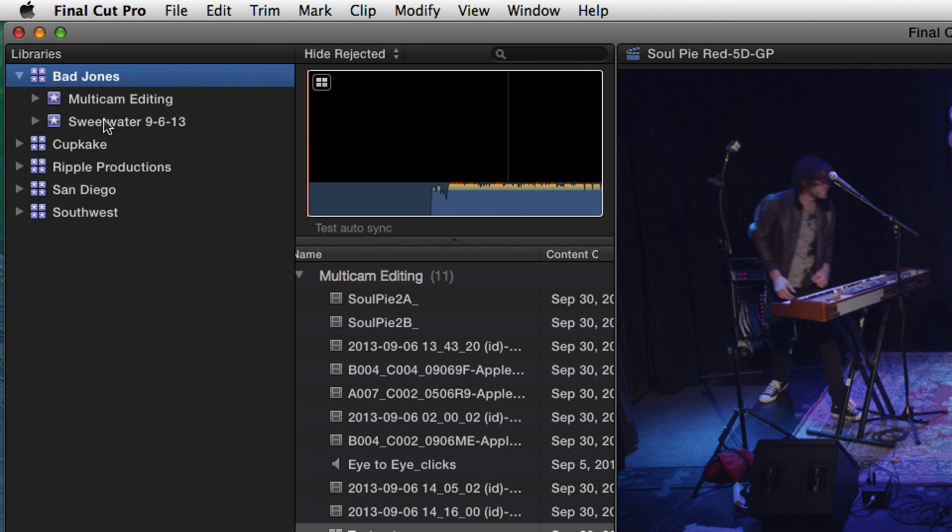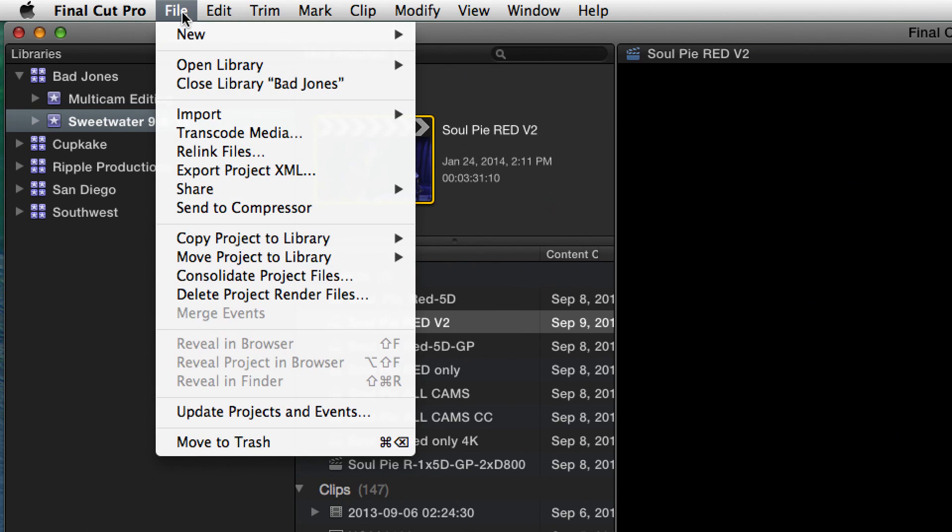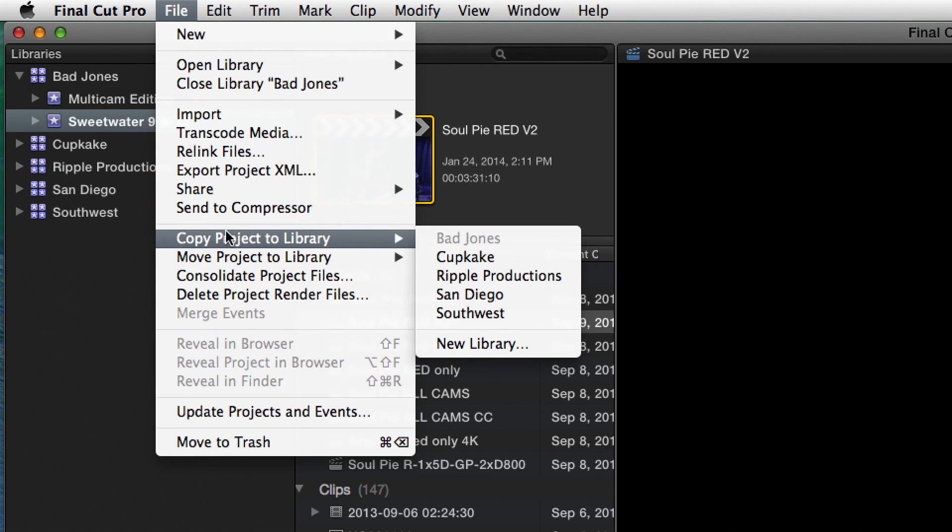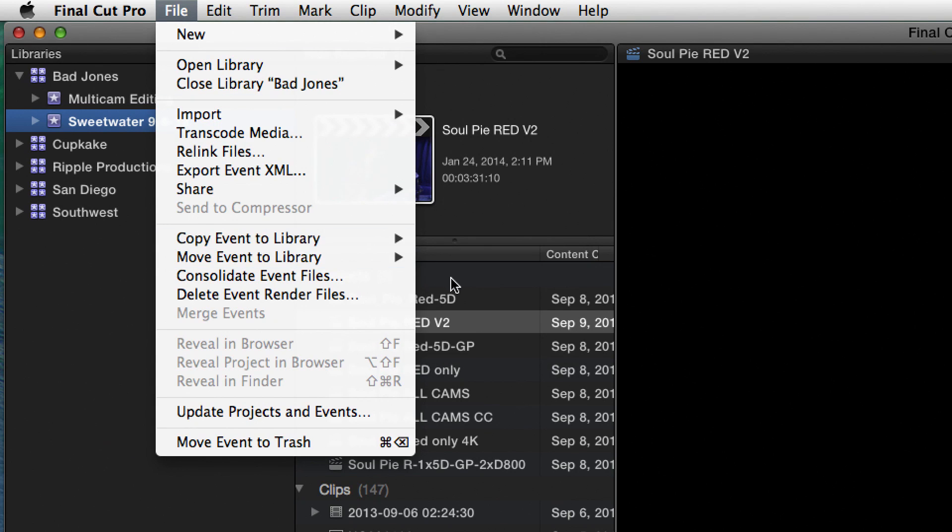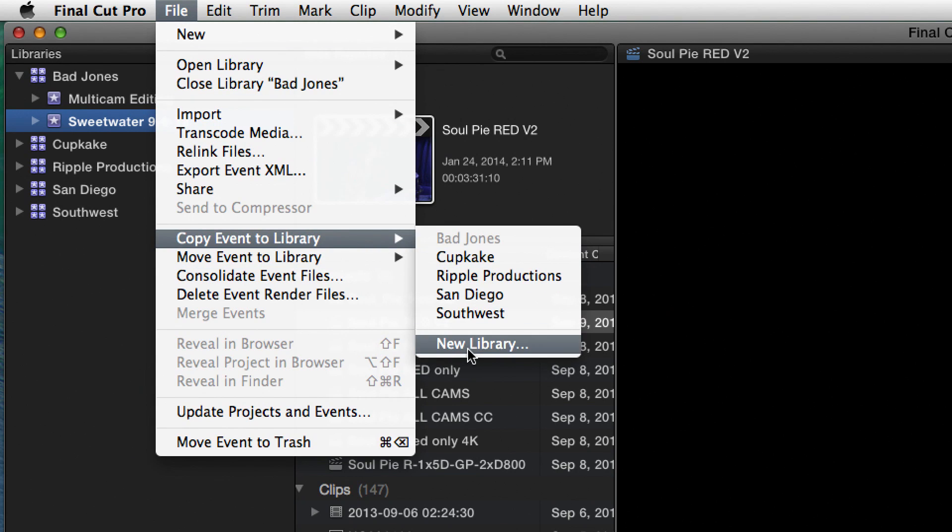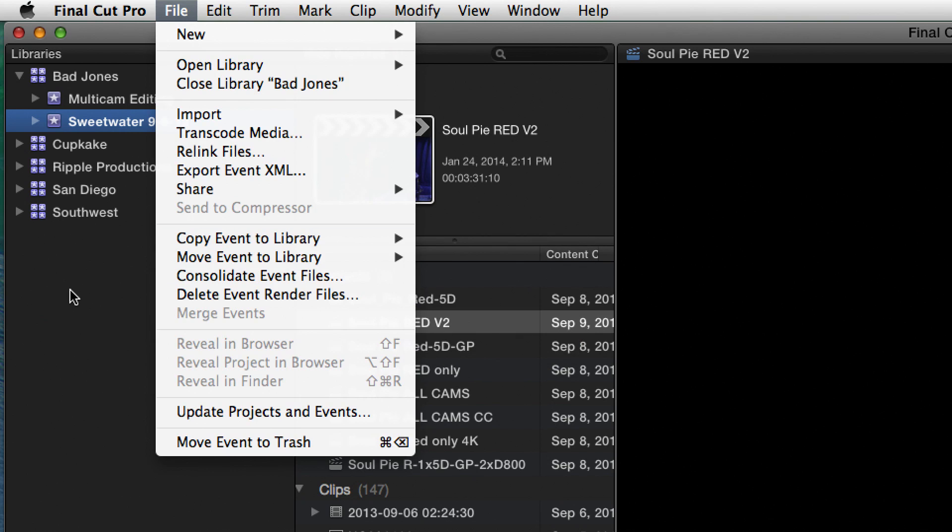if I go into an event and I want to copy a project and I select a project, I can choose to copy the project to another library or to a new library on a drive. And if I select an event, I can choose to copy the event to another library that may be an archive library or create a new library. So I can do that.